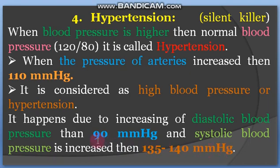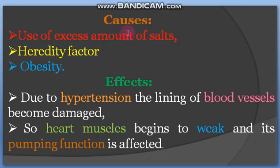Jab diastolic pressure 90 se zyada aur systolic pressure 135–140 se zyada ho tab use hypertension kehte hain. Isse zyada ho to hypertension, isse kam ho to hypotension. Hypertension ke causes mein excess amount of salt ka use shamil hai — jo log zyada namak istemal karte hain unka blood pressure badhta hai. Hereditary factor bhi hota hai.